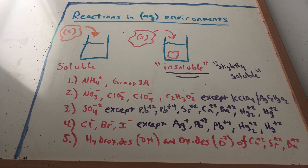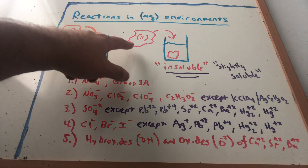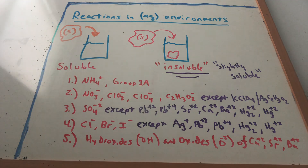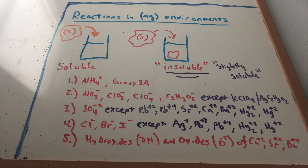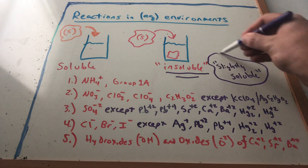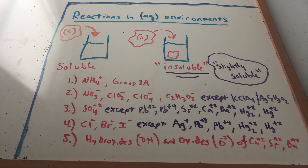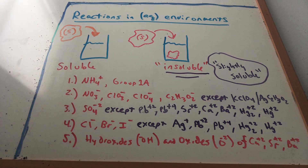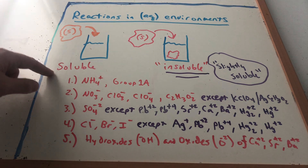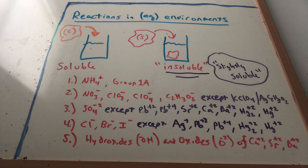If I put a soluble salt in water it goes away — it looks like it dissolves. If I put an insoluble salt in water, it looks like it just sinks to the bottom. It dissolves such a small amount that you couldn't see it with your naked eye, so we call it insoluble. We can do reactions with soluble salts, mix them together, and sometimes when we mix them we get something that is insoluble.